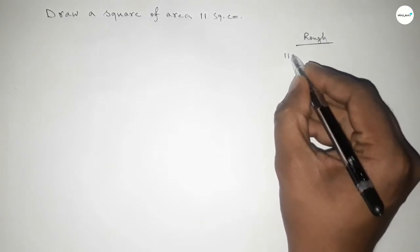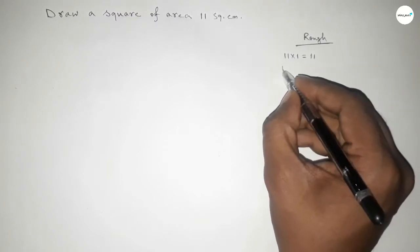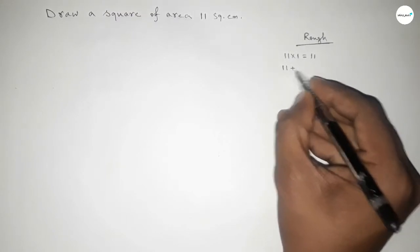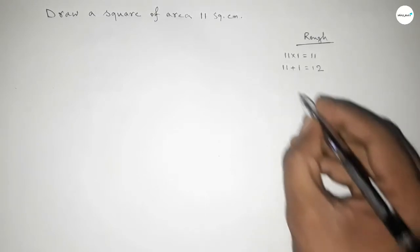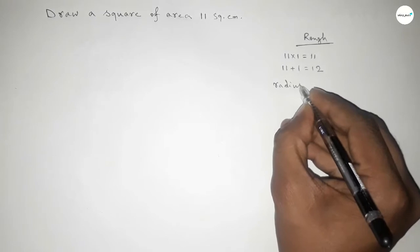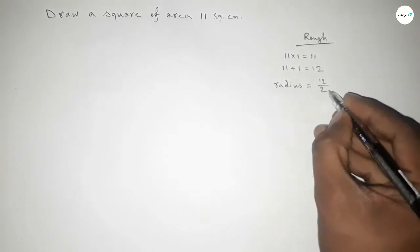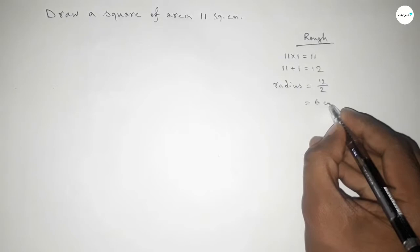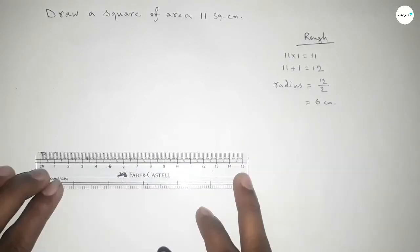We can write 11 = 11 × 1, and 11 × 1 = 11. Then we can write 11 + 1 = 12. So we have to draw a semicircle with diameter 12 centimeters, which means the radius will be 6 centimeters.